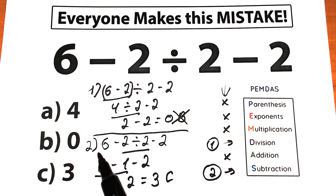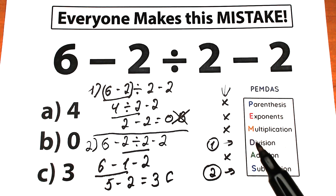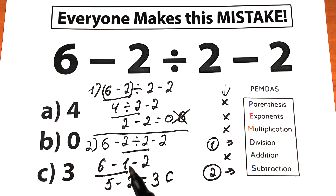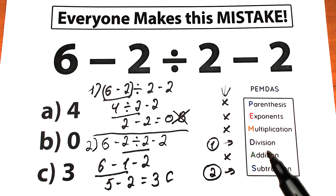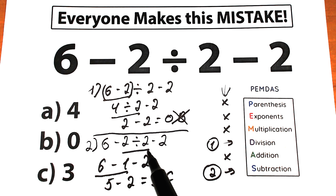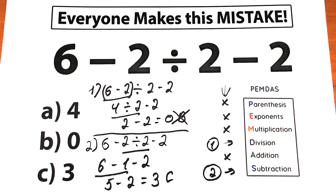In the second interpretation, we solve according to PEMDAS. First we divide, because division has higher priority than subtraction: 2 divided by 2 equals 1. Our second step is subtraction: 6 minus 1 equals 5, and 5 minus 2 equals 3. This is the correct answer, the correct approach, and the correct solution.